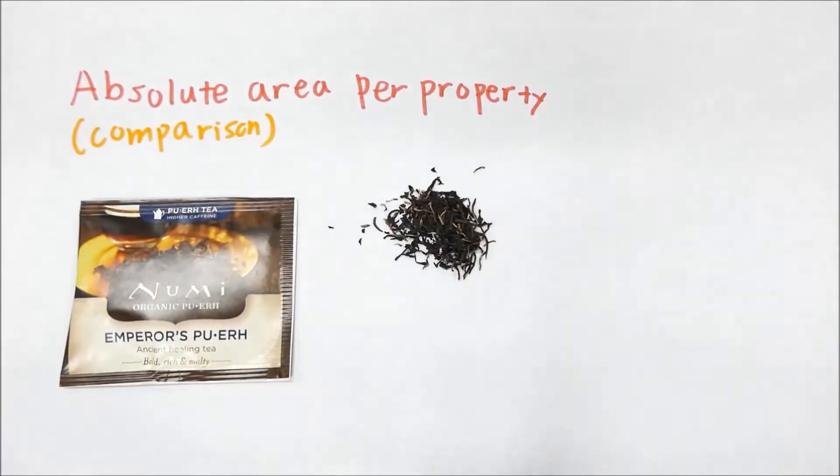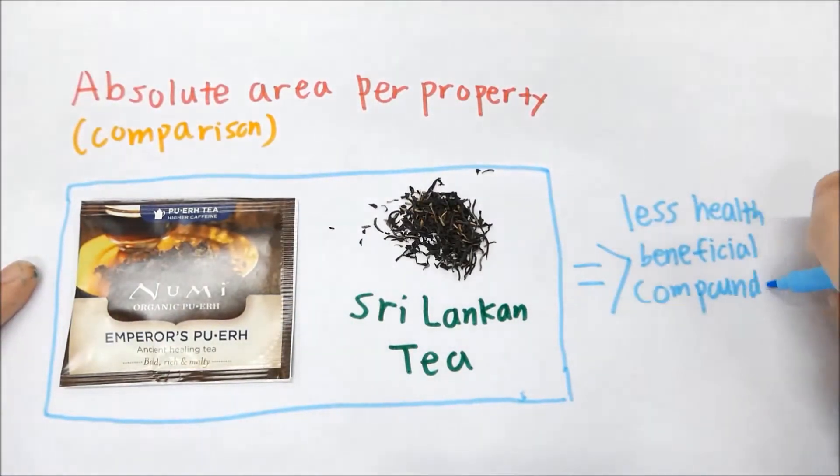Pua tea and Sri Lanka tea have relatively less compounds with health beneficial properties as compared to the other tea samples.